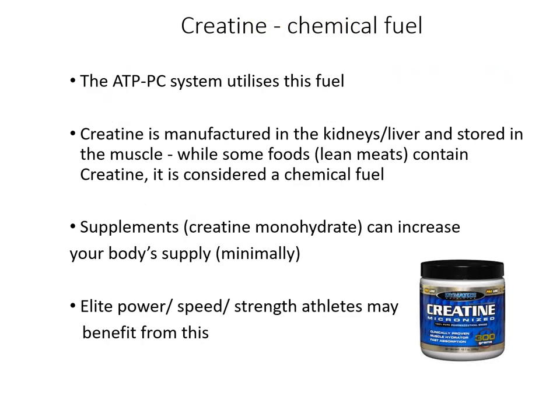The first fuel we'll look at is creatine, also called creatine phosphate or phosphocreatine. While it can be found in small amounts in lean meats and in powder supplement form, it's still considered a chemical fuel rather than a food fuel because the body essentially produces it internally — in the kidneys and liver — and it's stored in the muscle. The supplement form is used by power athletes to gain a slight edge in their creatine stores. The ATP-CP system uses this fuel.